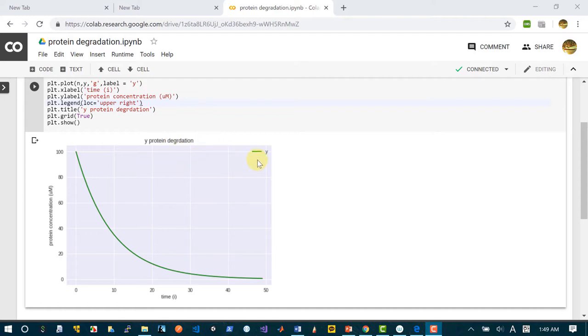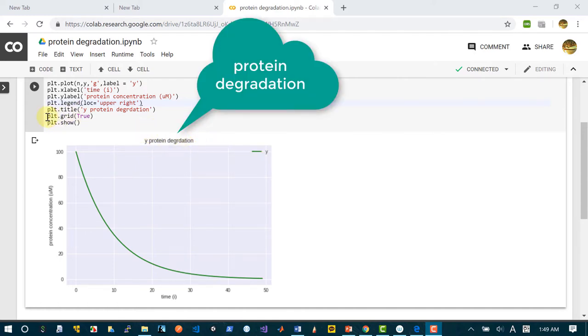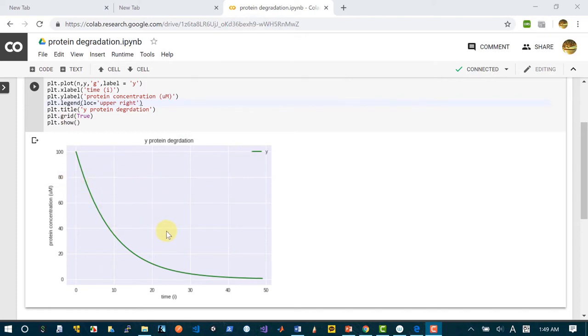So upper right. Plot dot title is shown here. Because we have plot dot grid, we have horizontal and vertical grid. And plot dot show displays this plot.